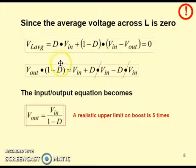During the on period, the inductor voltage is D into VIN, and during the off period the inductor voltage is 1 minus D into VIN minus Vout. Once you do this multiplication and leave out the terms, what you would get is Vout is equal to VIN by 1 minus D, where D is the duty cycle which has a range of 0 to 1.